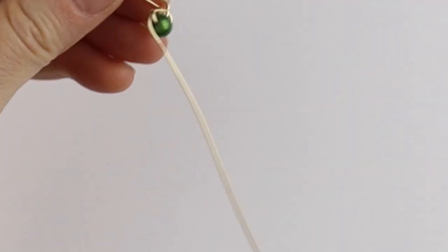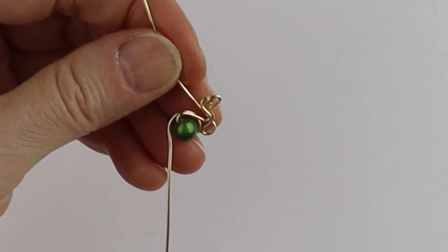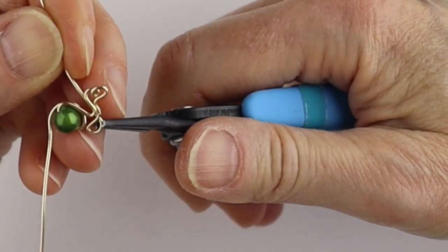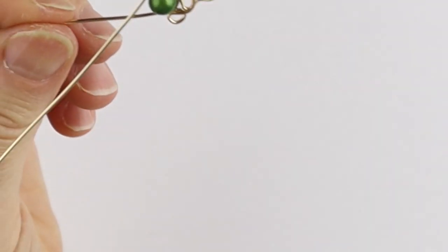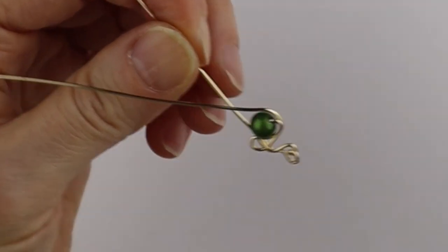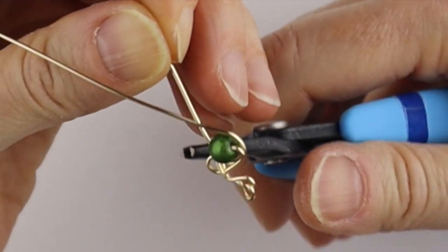You might need some smaller pliers to get in there, so get your needle nose pliers, bring them across. Then we want to do the other foot.